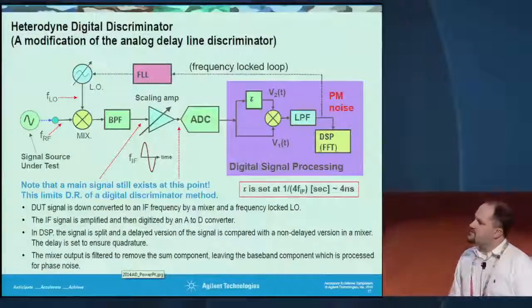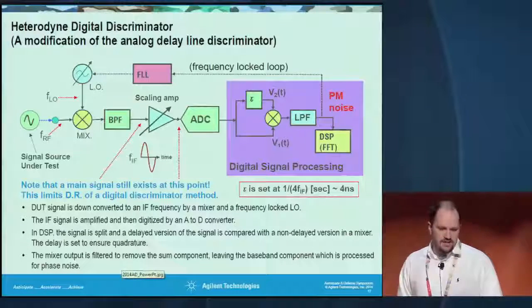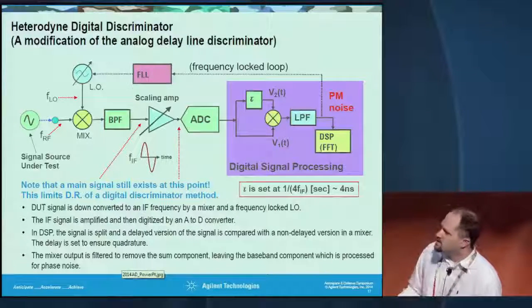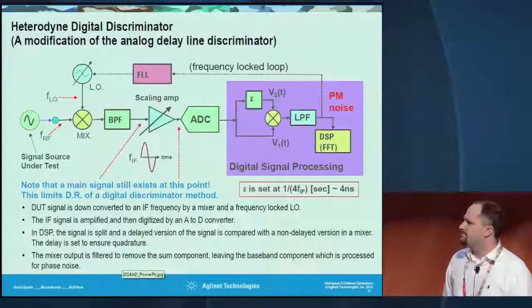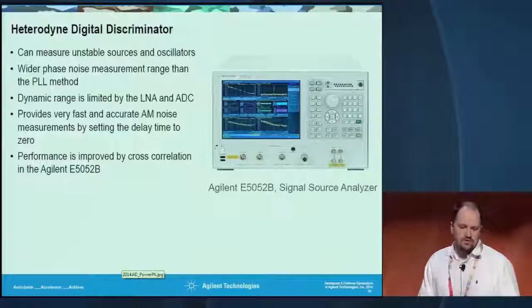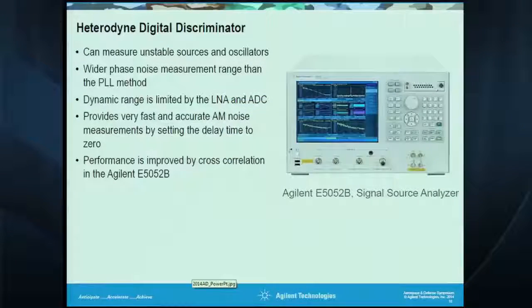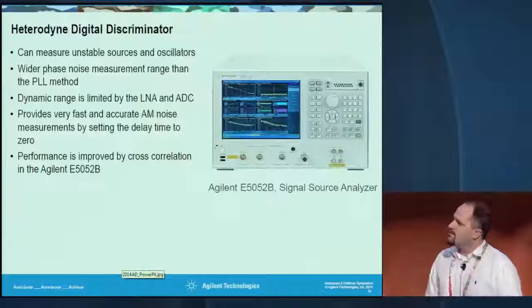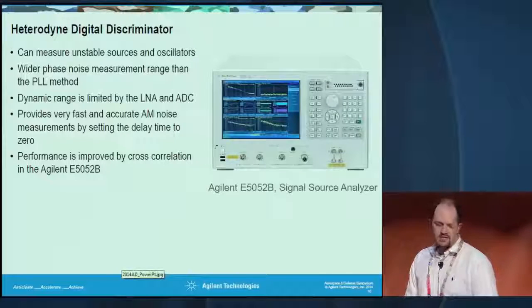We actually use the heterodyne digital discriminator in our N5052, which is a signal source analyzer. Basically, the DUT is down-converted by a mixer — we do this up to 26 GHz. The IF signal is amplified, then we use an A-to-D converter and digital signal processing to split the signal and do the comparison in the digital domain. You can measure unstable sources and oscillators, including voltage-controlled oscillators that move versus time. The dynamic range is limited by the low noise amplifier and ADC performance of the signal source analyzer. It's pretty fast and accurate, and improved by cross-correlation, which we'll talk about next.